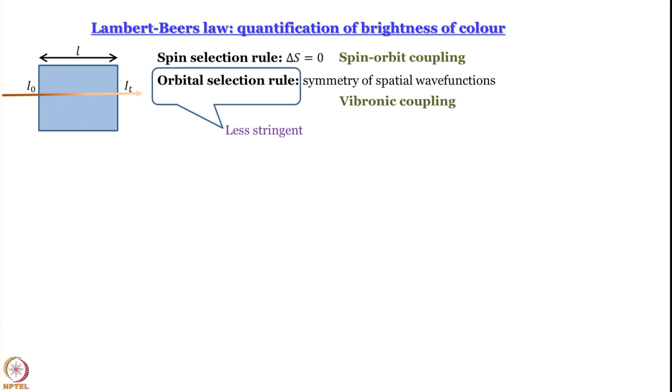In the next module, we will start from here. Whether a transition is allowed or forbidden is not a 0-or-1 situation — it is graded. You can have different intensities of colors. This is quantified by Lambert-Beer's law. From Lambert-Beer's law we will get an idea of exactly what is the extent of allowedness of a transition. We will then go on to different kinds of transitions and what absorption spectra actually look like.